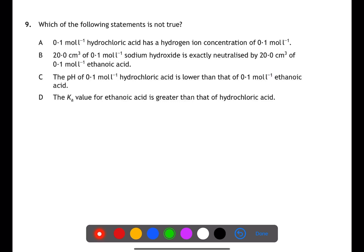Question nine has us look at a number of statements about acids. For A, 0.1 molar hydrochloric acid solution has a hydrogen ion concentration of 0.1 mole per liter. This is because it is a monoprotic acid and therefore for every mole of hydrochloric acid you have, you have one mole of hydrogen ions.